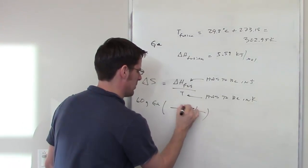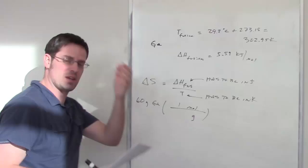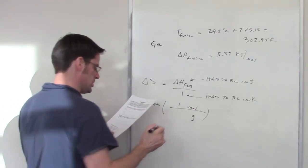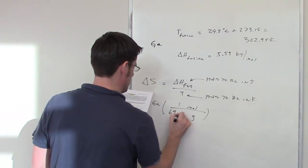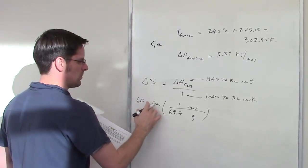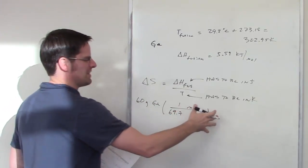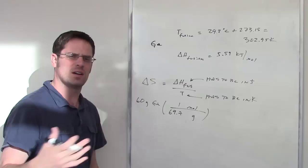I've got grams down here and moles up here. One mole of gallium weighs a certain amount. We can find that on the periodic table. Fortunately I already did: 69.7. You'll notice that the grams cancel with moles, but I want to eventually get to joules. How can I do that?